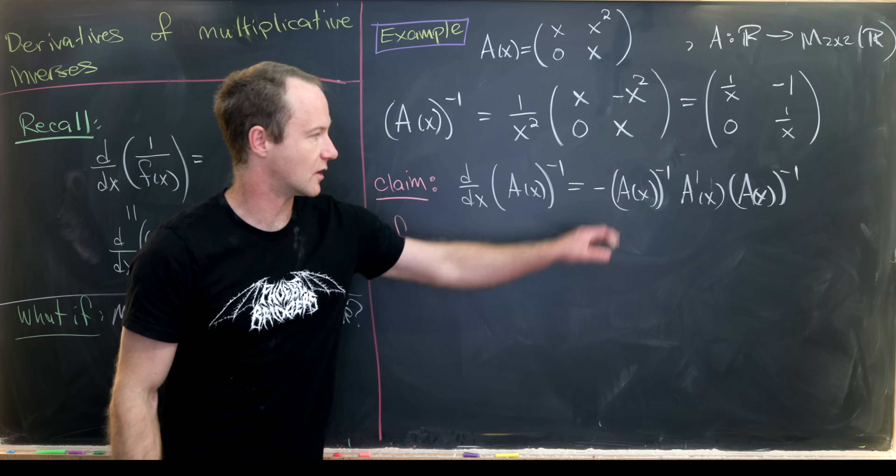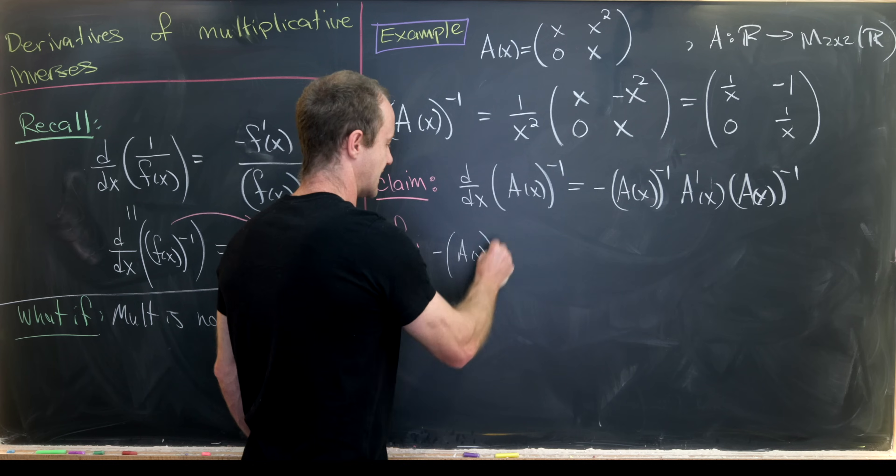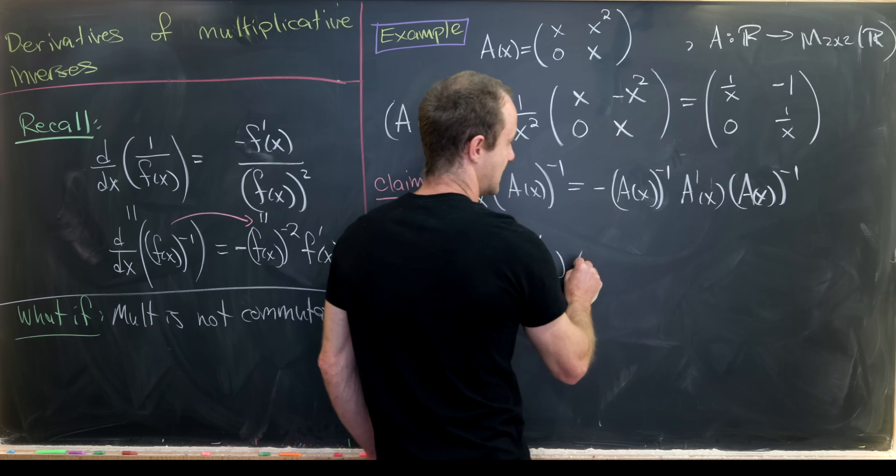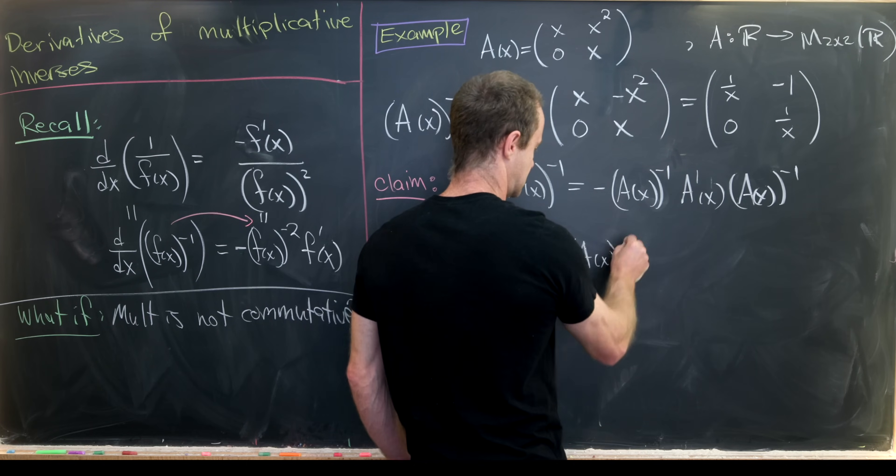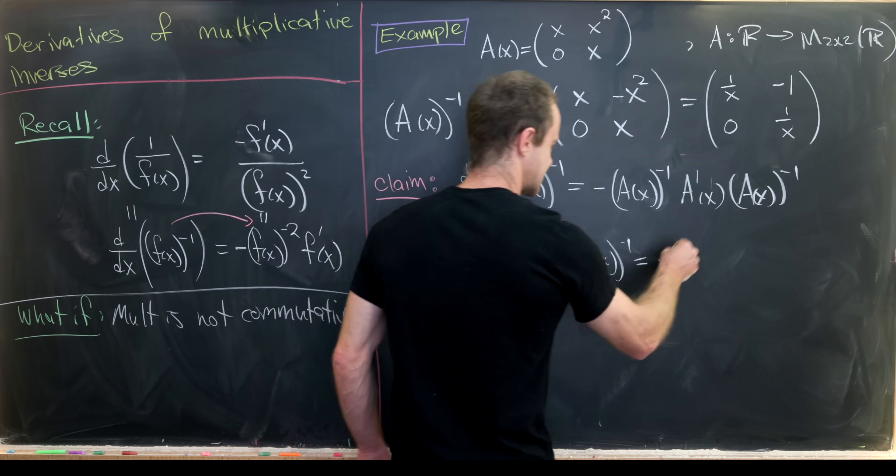We'll just start with the right-hand side. So we'll have minus, I'll just recopy that. That's A(x) to the minus 1, A'(x), and then A(x) multiplicative inverse. Now let's insert all of those parts.